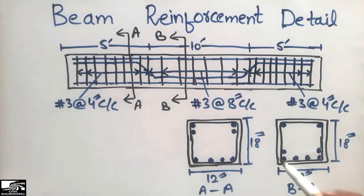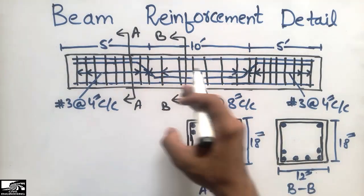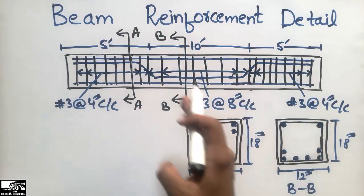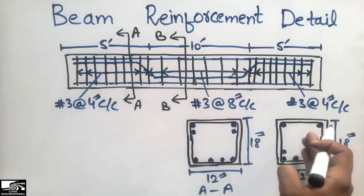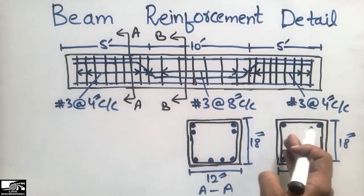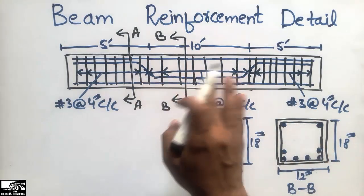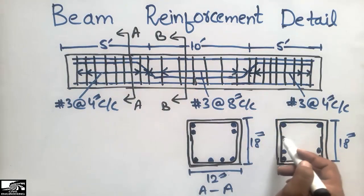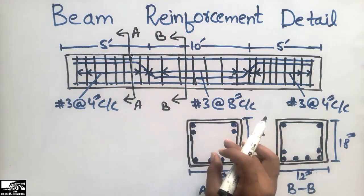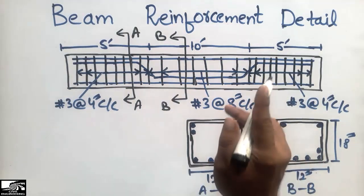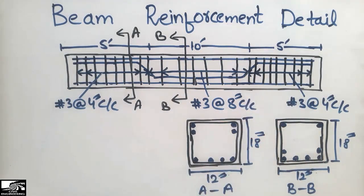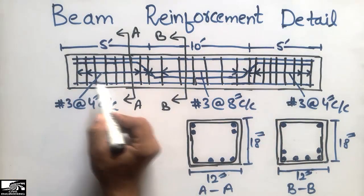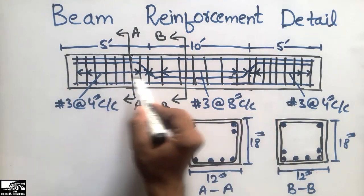There is some difference between these two sections, that's why we have two different sections. If there were no difference between the sections, you would only need to draw one section.